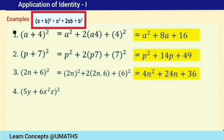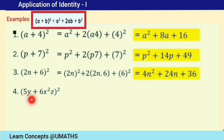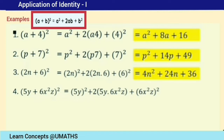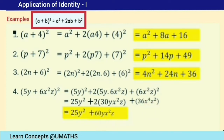Let us solve the next example: 5y plus 6x squared z, whole square. Here a is 5y and b is 6x²z. The first term squared is (5y) squared; then 2 times 5y times 6x²z; plus (6x²z) squared. Squaring 5y gives 25y squared; the middle term gives 60yx²z; and squaring 6x²z gives 36x to the power 4, z squared.